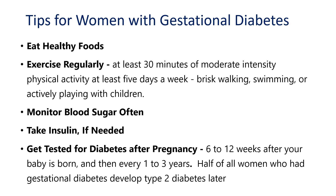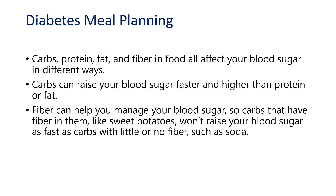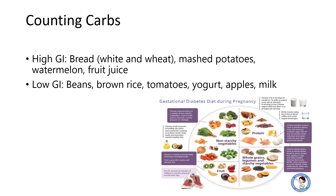So what are the tips for women with gestational diabetes? You may have to eat healthy foods, plan your meal properly, exercise regularly, monitor your blood sugar often, take insulin if recommended, and get tested for diabetes after pregnancy. For meal planning, take less carbohydrates or carbohydrates with low glycemic index, and take protein, fats, and fiber-rich foods in place of carbohydrates. Foods with high glycemic index include white and wheat breads, mashed potatoes, watermelon, and fruit juices.